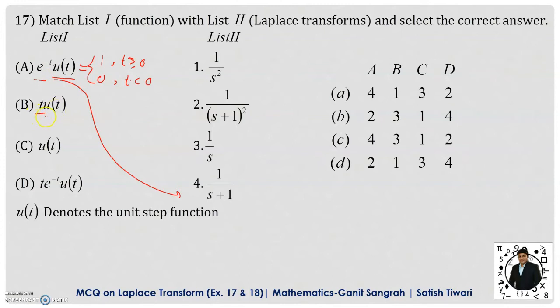Laplace transformation of t is given by 1 upon s square, because we use this formula: Laplace transformation of t to the power n is given by n factorial upon s to the power n plus 1. So we are having t to the power 1, so it would be 1 factorial upon s to the power 1 plus 1, and that is 1 by s square.